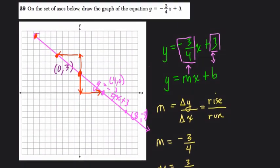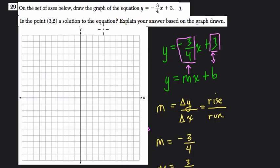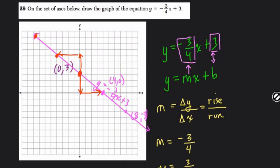They also want to know, let me see if I can pull this up, if the point 3, 2 is a solution to your equation. Now, that means literally is the point 3, 2 on the line. So let's look at that. Is the point 3, 2 on our line? That's one way to look at it. And then we'll use the equation as well.